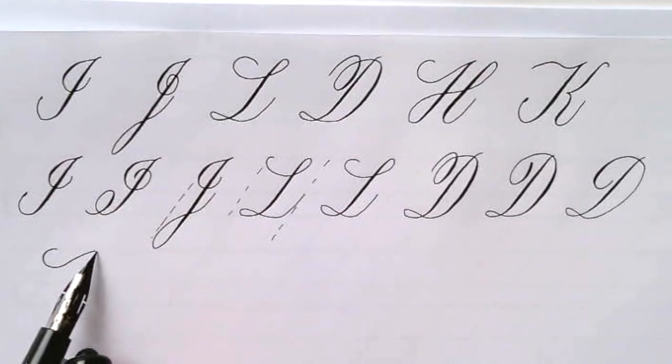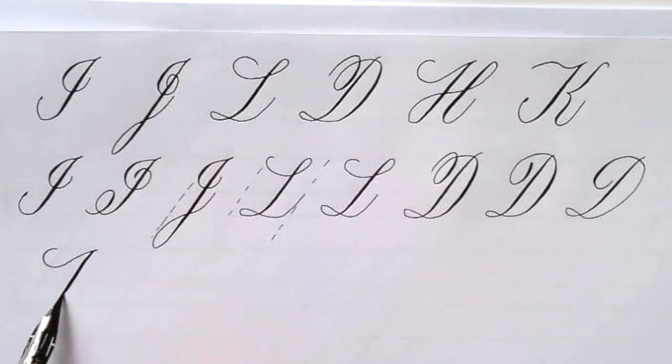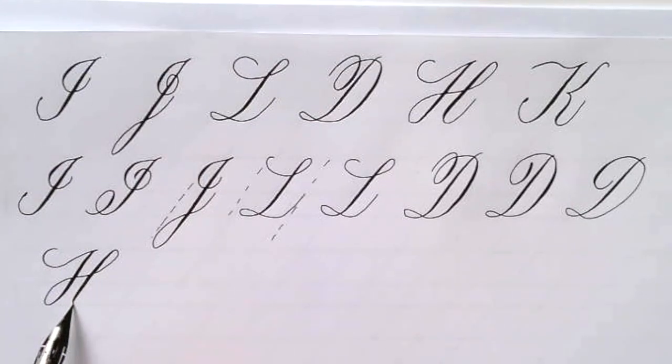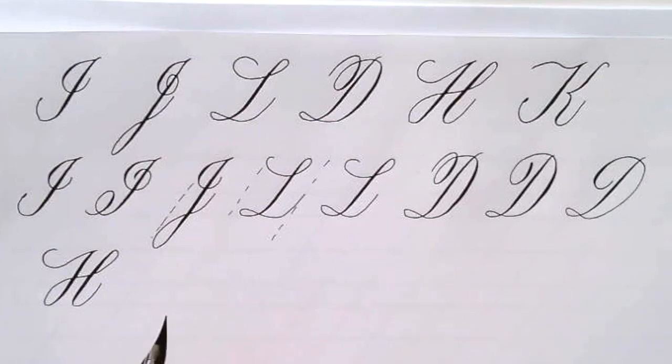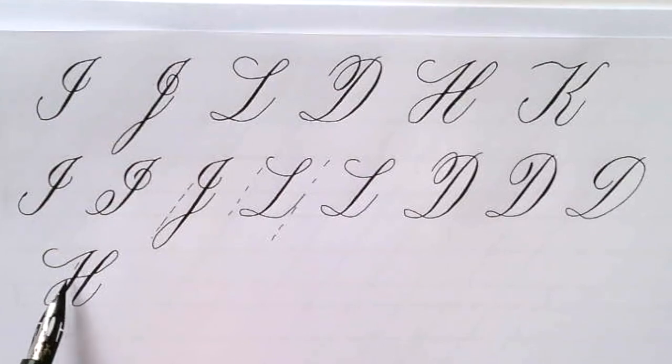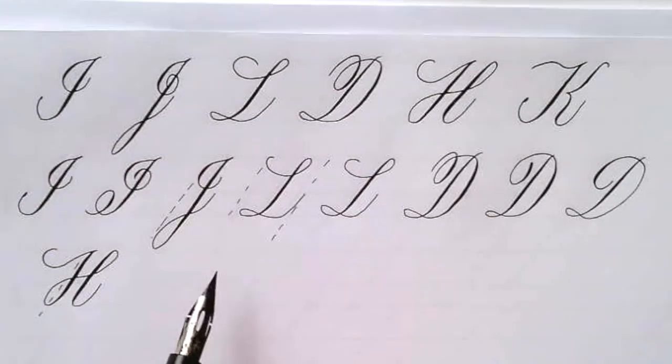The H has that half heart fish hook kind of entrance and then is done in one stroke. You're going to want to make sure that everything follows the 55 slant line.